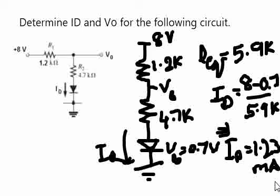That means this is around 1.23 milliamps. So the current is 1.23 milliamps. As the current is 1.23 milliamps, we know the current passing through this, through the resistor and then the diode.